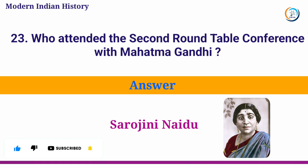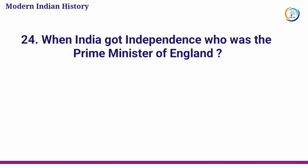When India got independence, who was the Prime Minister of England? Answer: Clement Attlee.